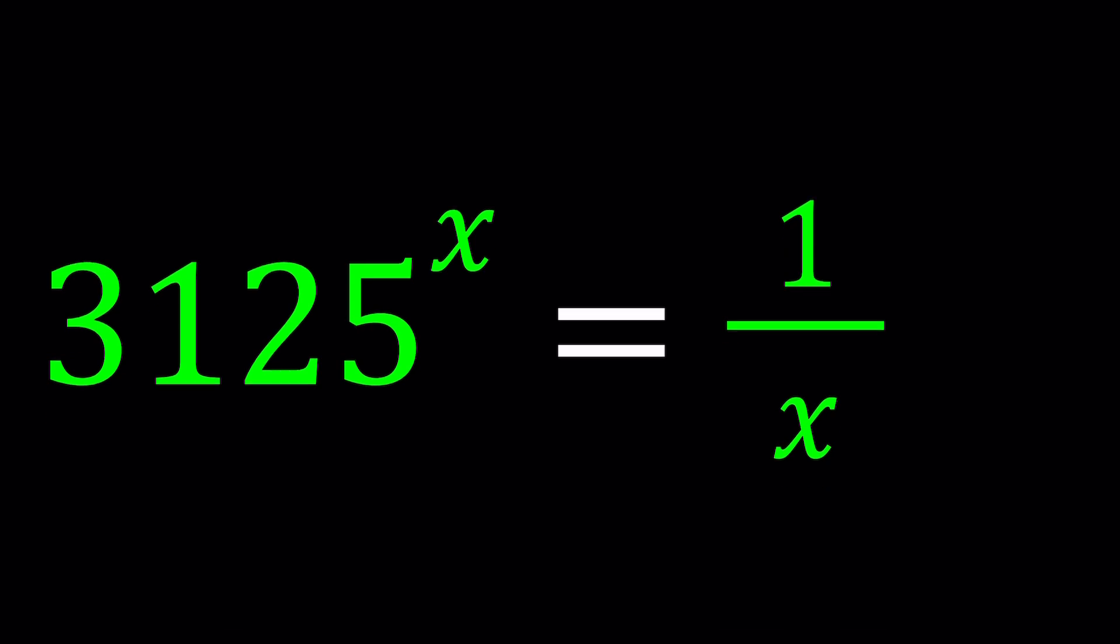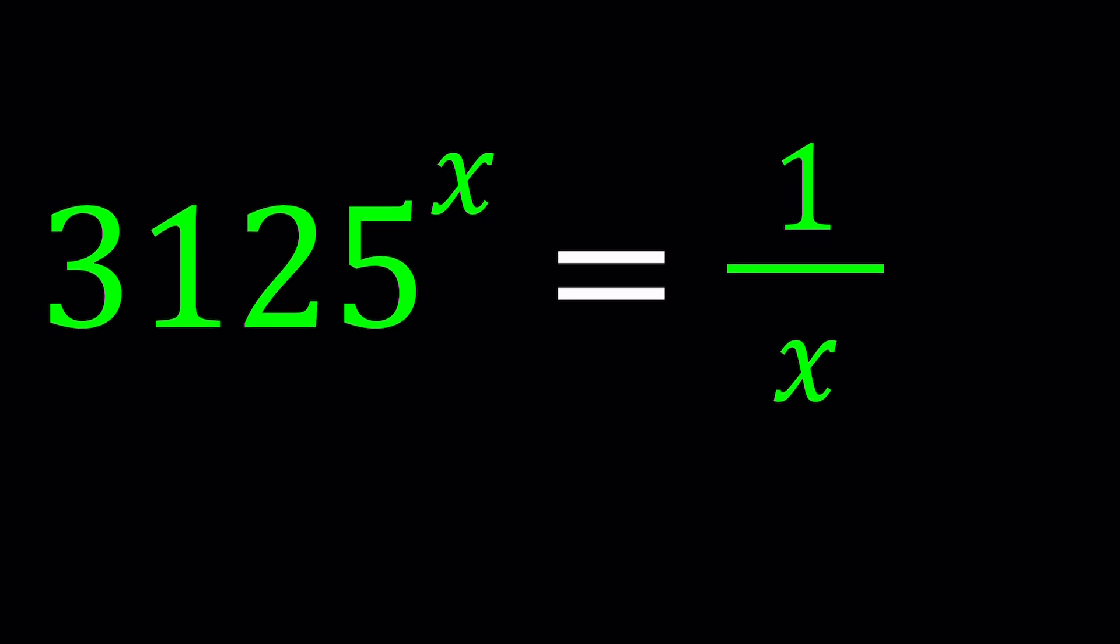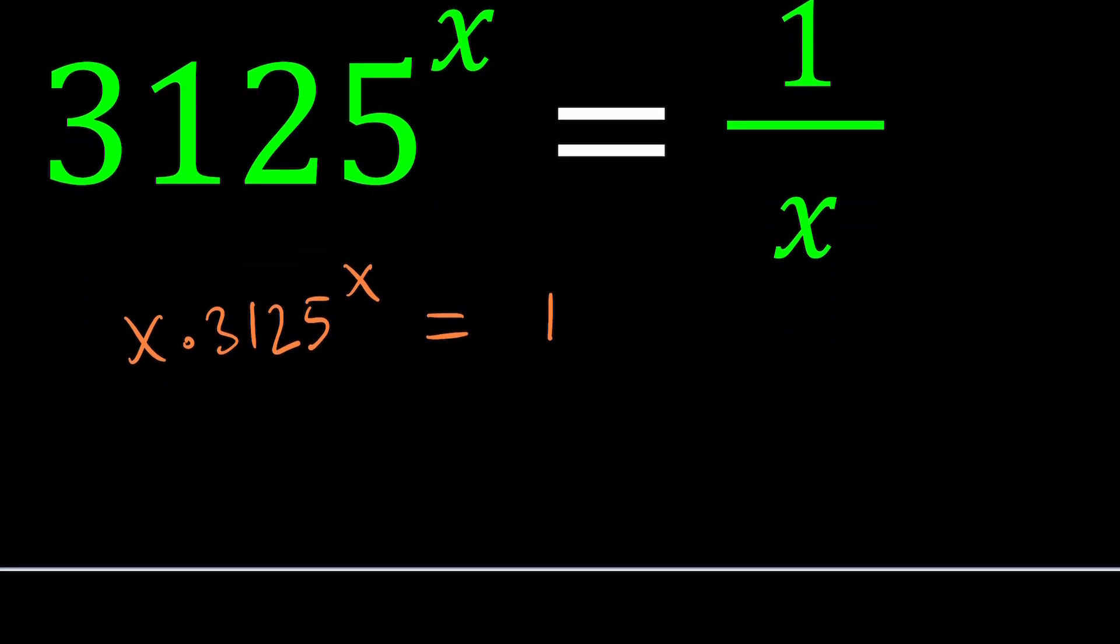When you get a problem like this it's probably very typical to cross multiply because you usually want to get things on the same side, right? So let's go ahead and do that. If you multiply both sides by x, you get x times 3125 to the power x equals 1. Now are you able to guess and check? Probably, but I think from that perspective the original equation is better and we'll get back to that later.